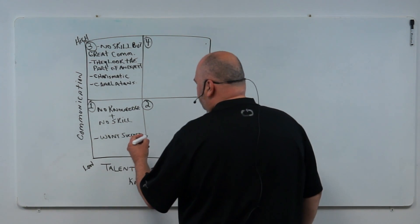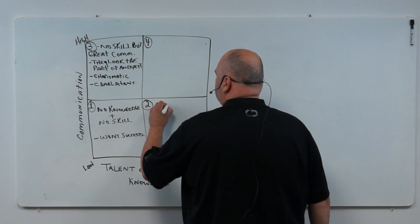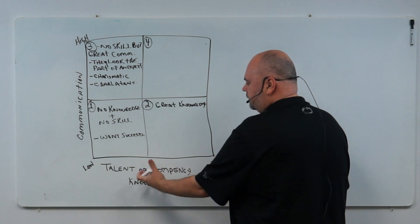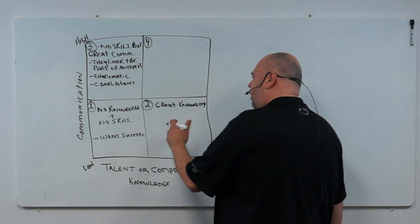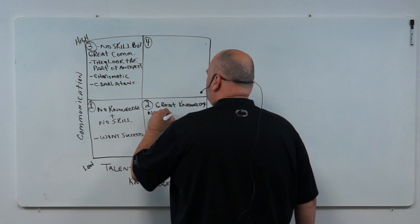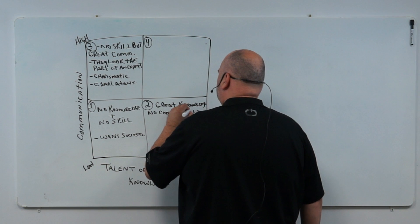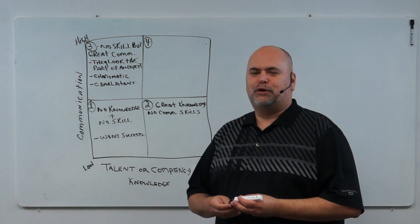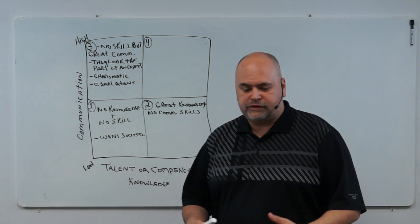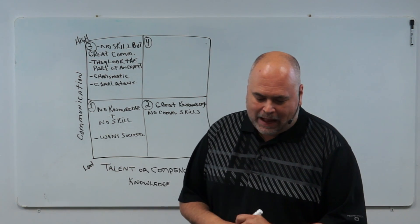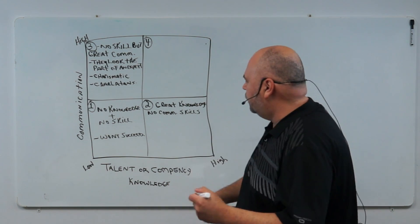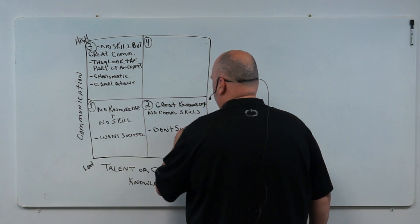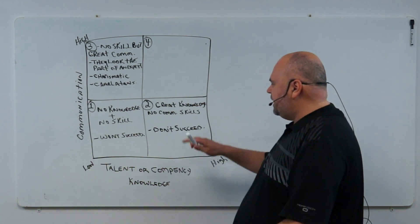Box number two: these people have great knowledge. They're high on that knowledge, talent, and competency scale. But they have no communication skills. So they have a lot of understanding — there's so much you can learn from this person — but you don't want to listen to them because they can't communicate it. They put you to sleep, or they're boring. You just can't receive from them. High in knowledge and skill, but they can't communicate, so they don't succeed either.